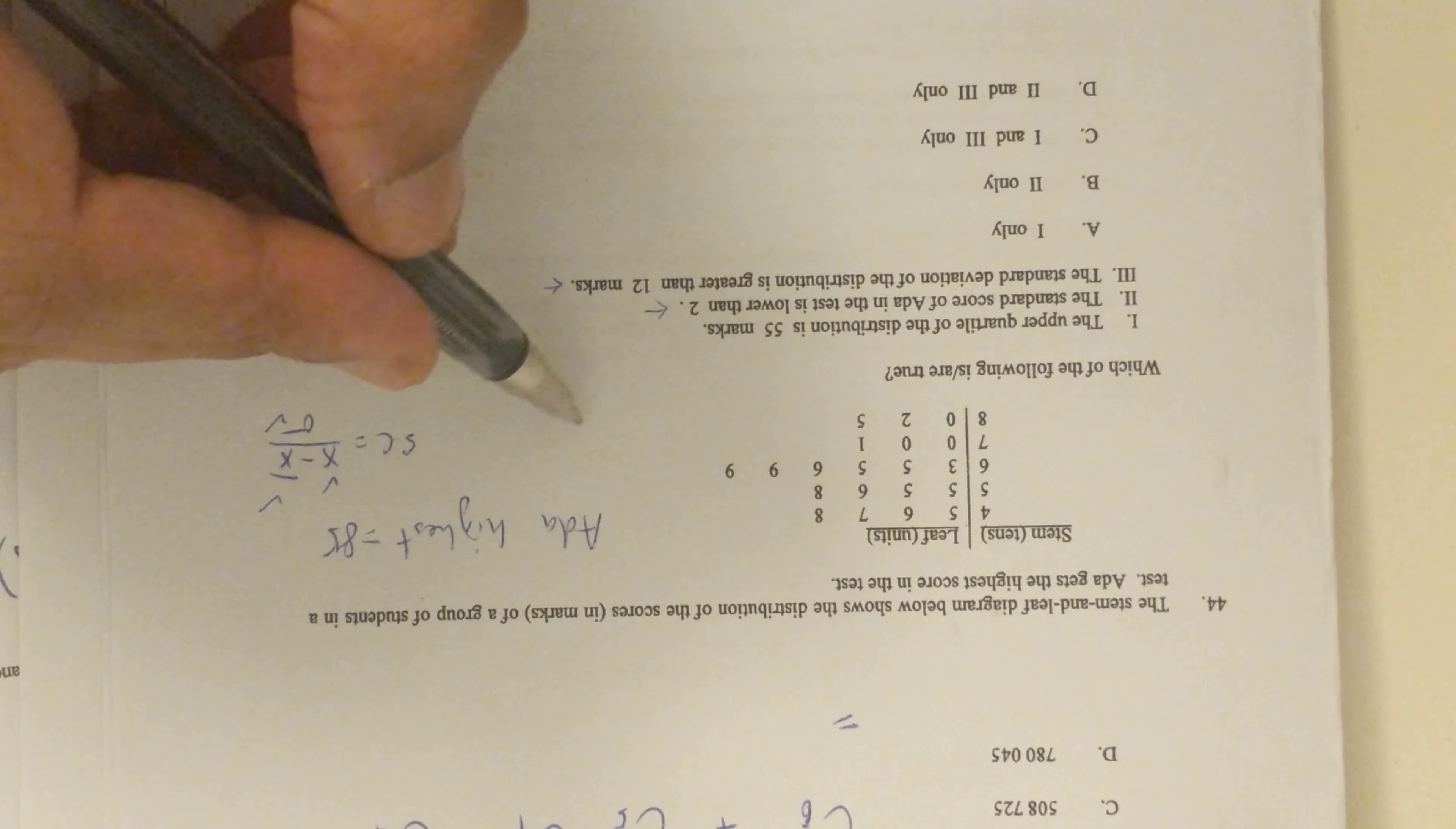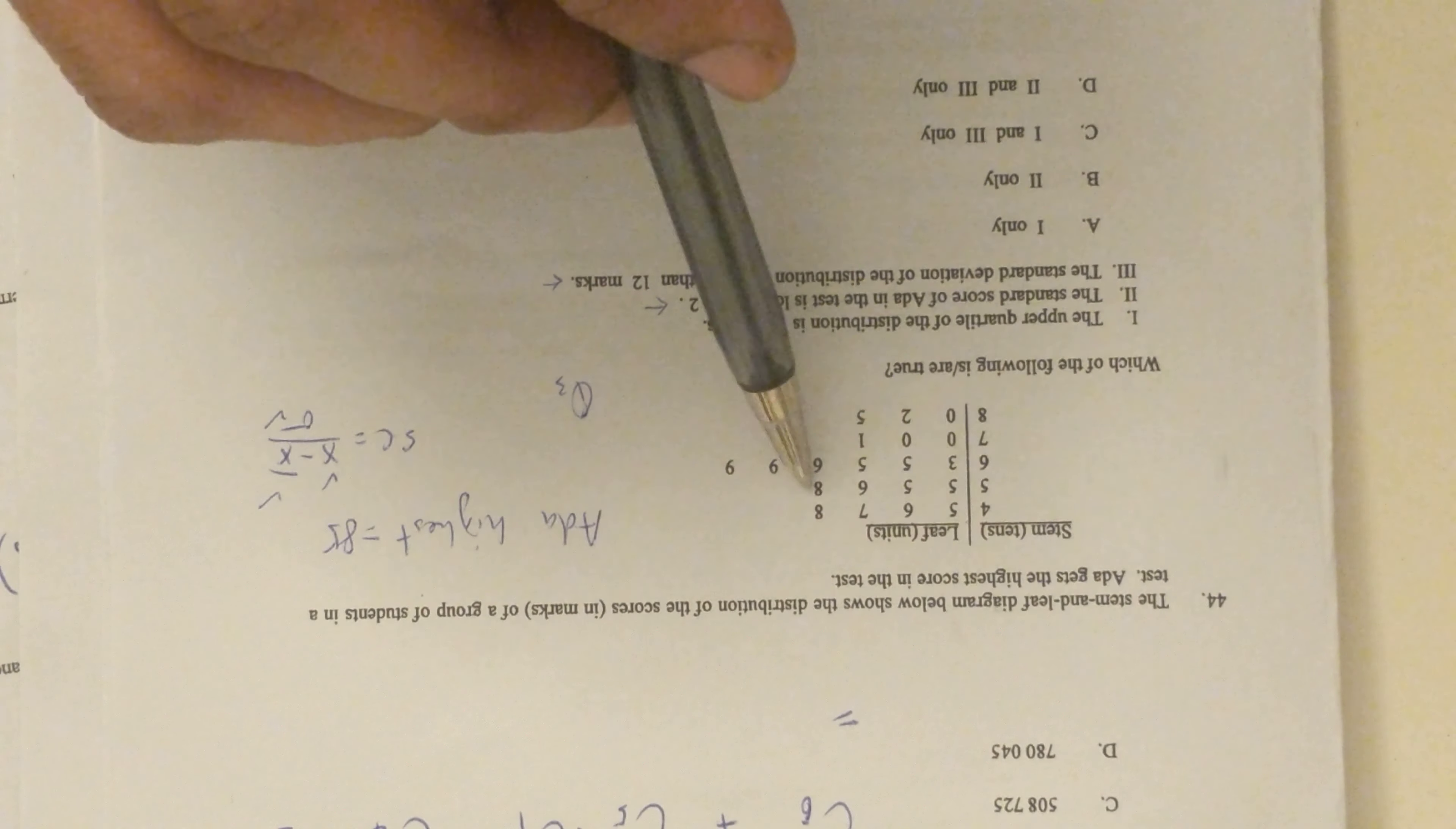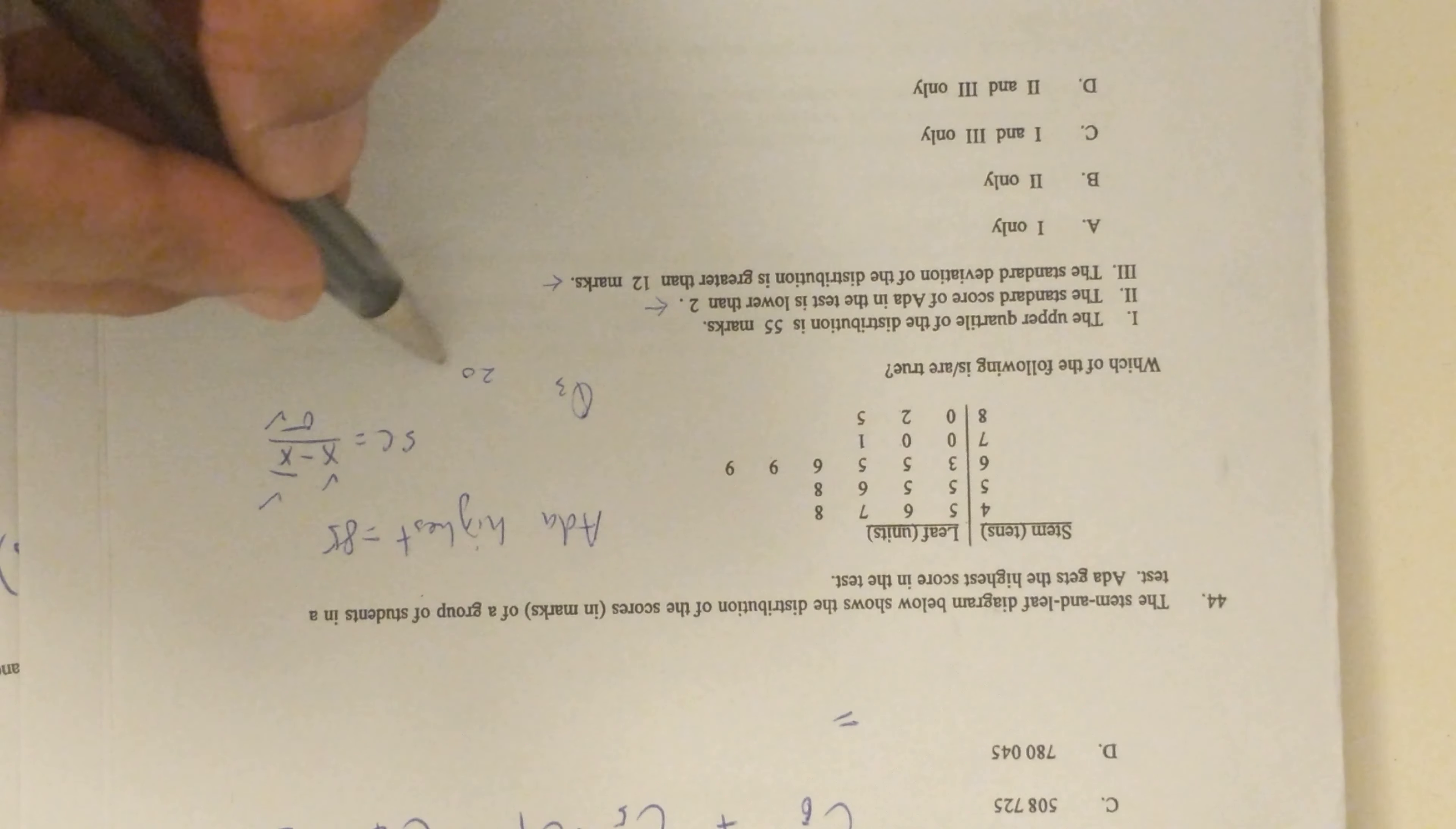They're asking for Q3. How many data are there? 1, 2, 3, 4, 5, 6, 7, 8, 9, 10, 11, 12, 13, 14, 15, 16, 17, 18, 19, 20. So 20, and you can do it two ways - either you plus 1 and divide by 2. Luckily this is a number divisible by 4.